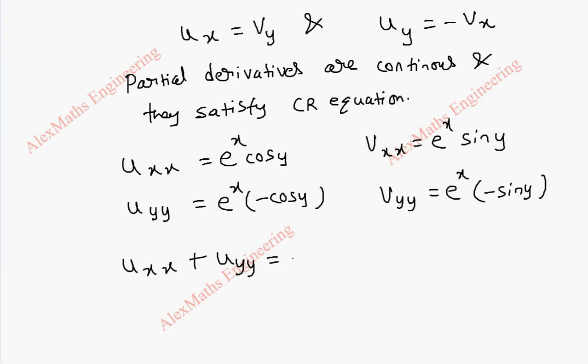Now when I take uxx plus uyy, we find e^x cos y plus e^x into minus cos y, that is equal to 0.